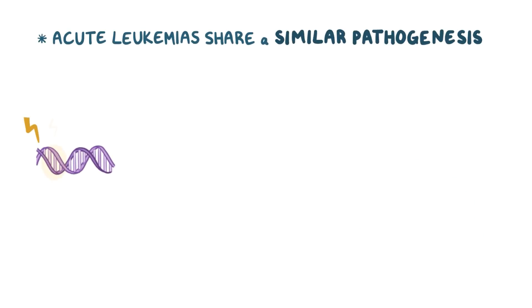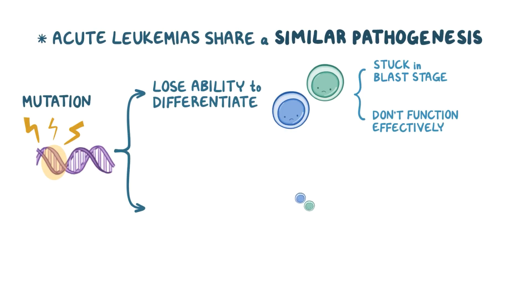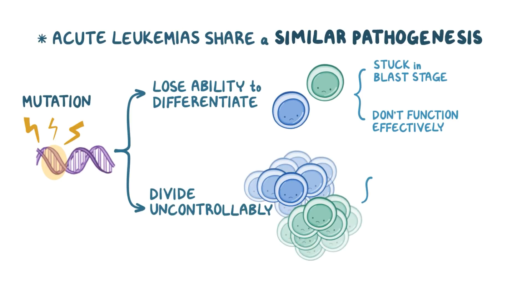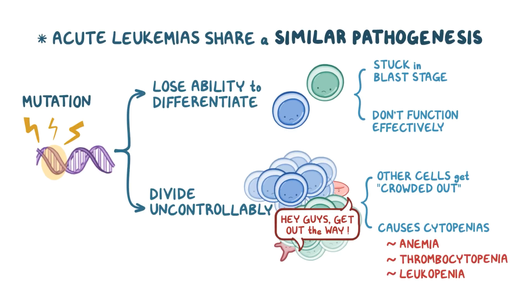Regardless of the type of mutation, acute leukemias share a similar pathogenesis. The mutation does two things. First, it causes the precursor blood cells to lose their ability to differentiate into mature blood cells, meaning they're stuck in the blast stage and don't function effectively. Second, it makes the blast cells divide uncontrollably, taking up a lot of space and nutrition in the bone marrow. This means the other normal blood cells get crowded out, causing cytopenias — a reduction in the number of healthy blood cells — like anemia, which is a reduction of healthy red blood cells, thrombocytopenia, a reduction of healthy platelets, and leukopenia, or a reduction of healthy leukocytes.